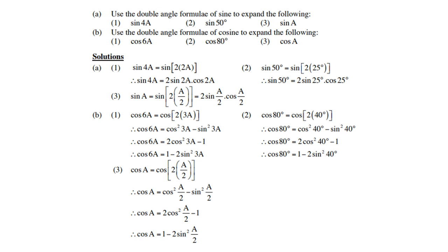Use the double angle formula of cosine to expand the following. Cos of 6a: since 6a = 2 × 3a, it equals cos² 3a minus sin² 3a, which is also 2 cos² 3a minus 1, or 1 minus 2 sin² 3a. Cos of 80°: since 80 = 2 × 40, it equals cos² 40° minus sin² 40°, or 2 cos² 40° minus 1.